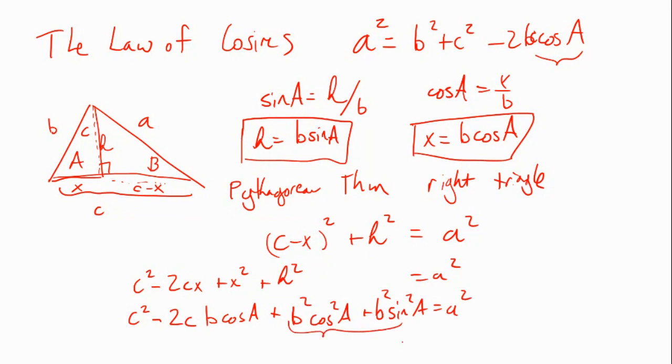Now observe that this term is B squared cos squared A plus B squared sine squared A. I can factor out B squared leaving behind cos squared A plus sine squared A, and it doesn't matter what angle A is, cos squared A plus sine squared A is just 1. So that whole term is just B squared. I still have C squared. I have to subtract 2 times B times C times the cosine of A, and what do I have on the right? A squared and I'm done.